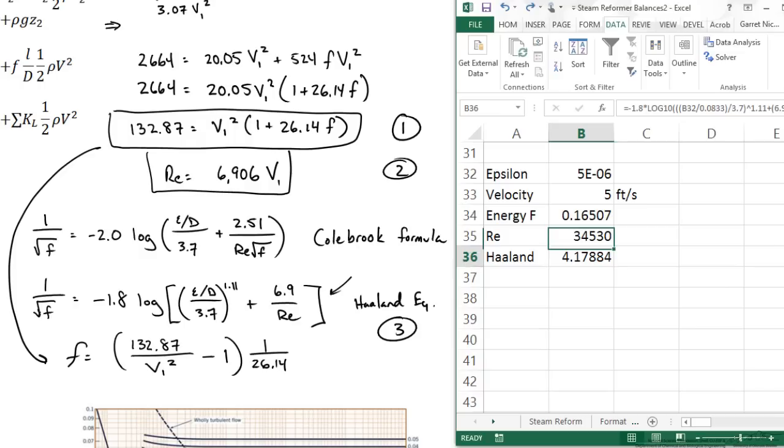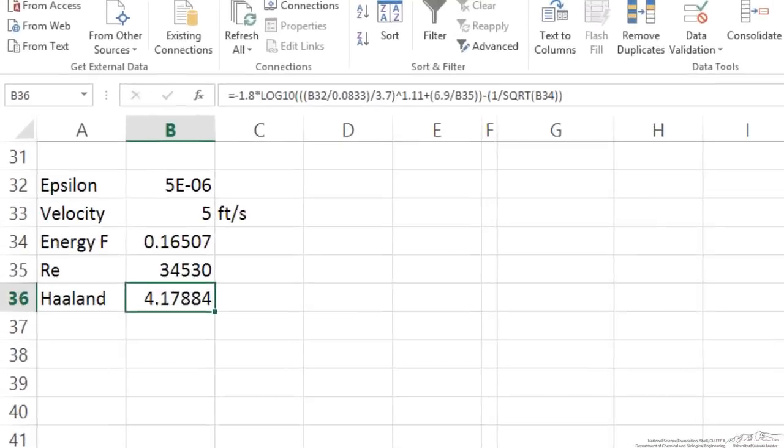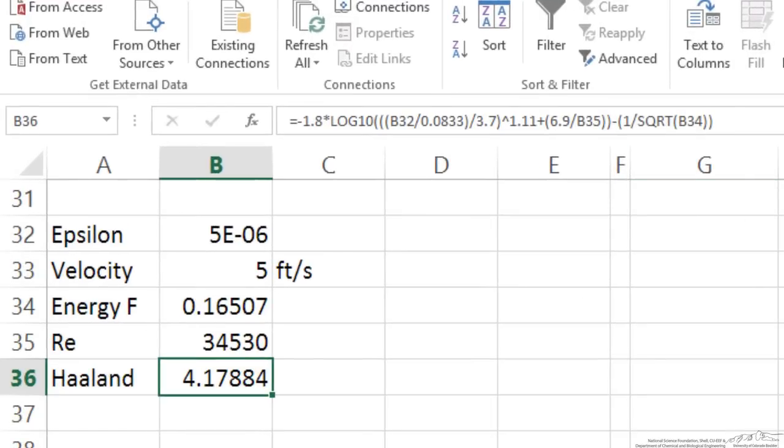Now both of these go into the Haaland equation. The Haaland equation I have marked as 3 on my sheet. You see I have it typed up here in our Excel equation bar and I brought that negative 1 over square root of our friction factor onto the right side. So all of this should equal 0.